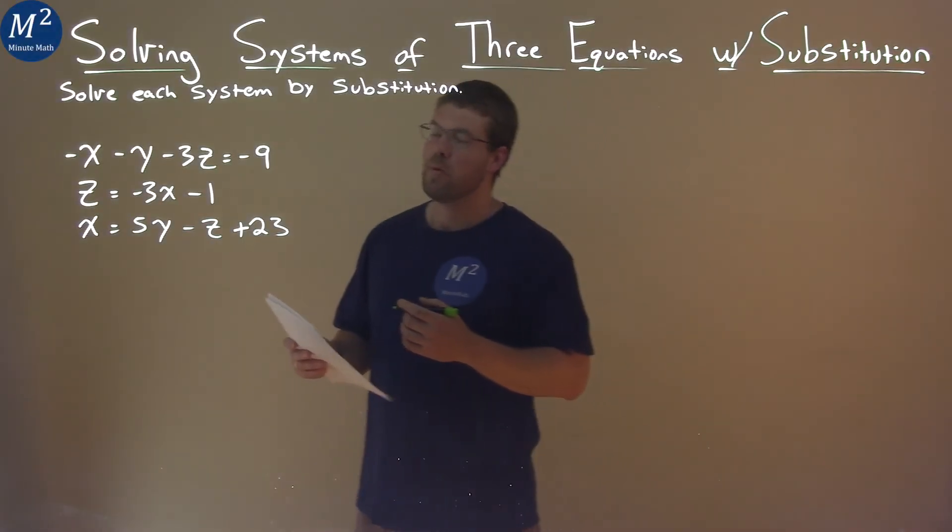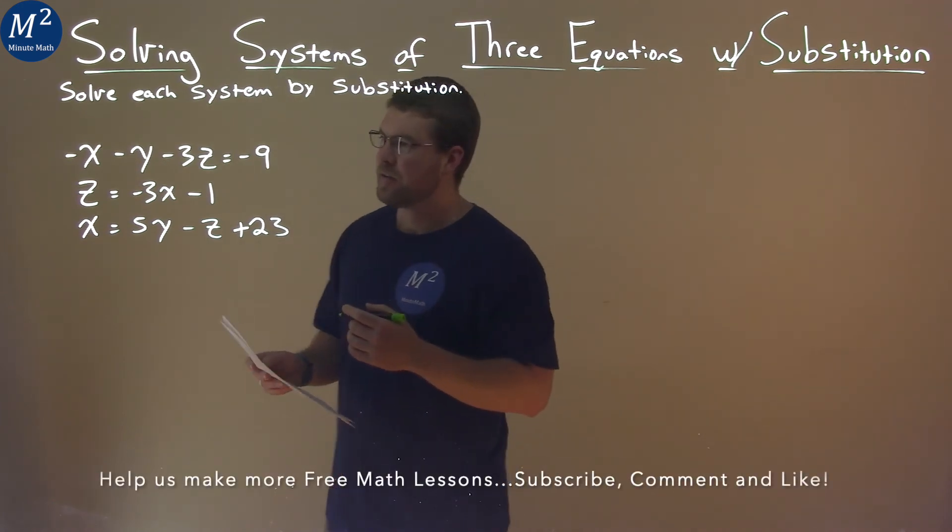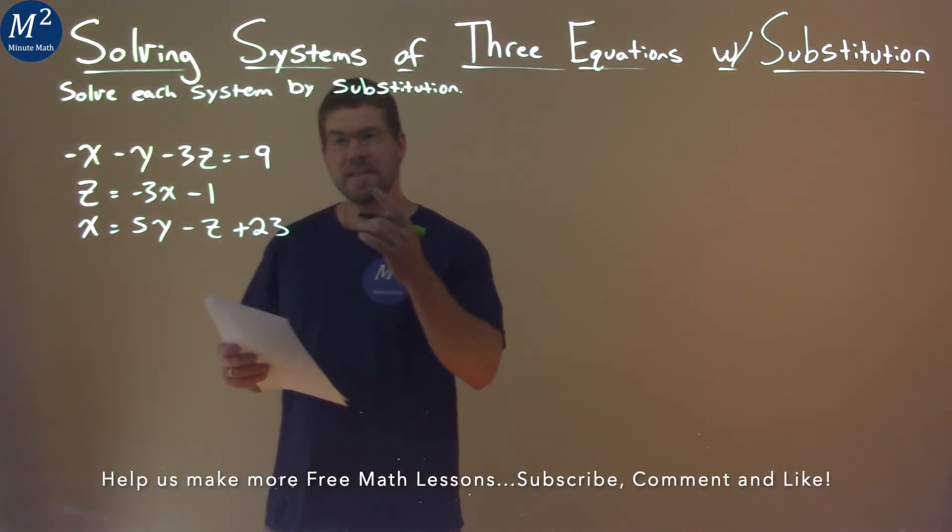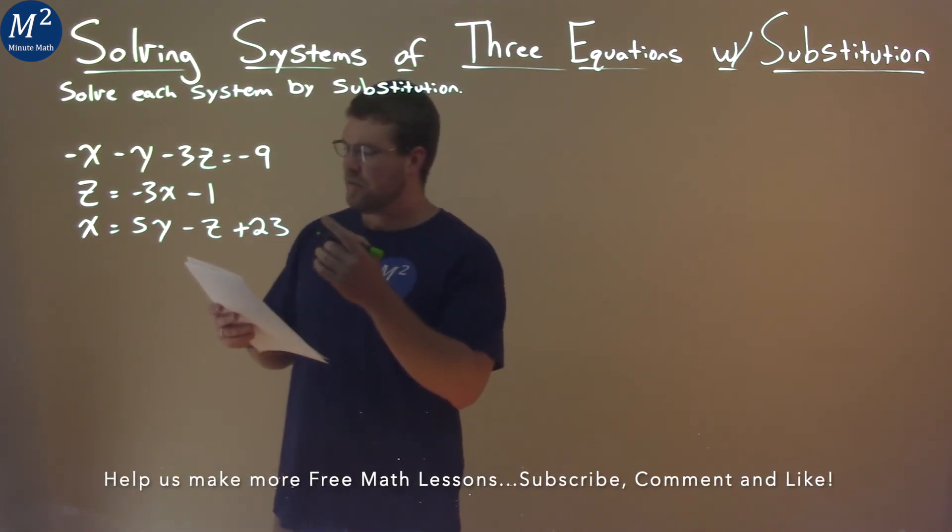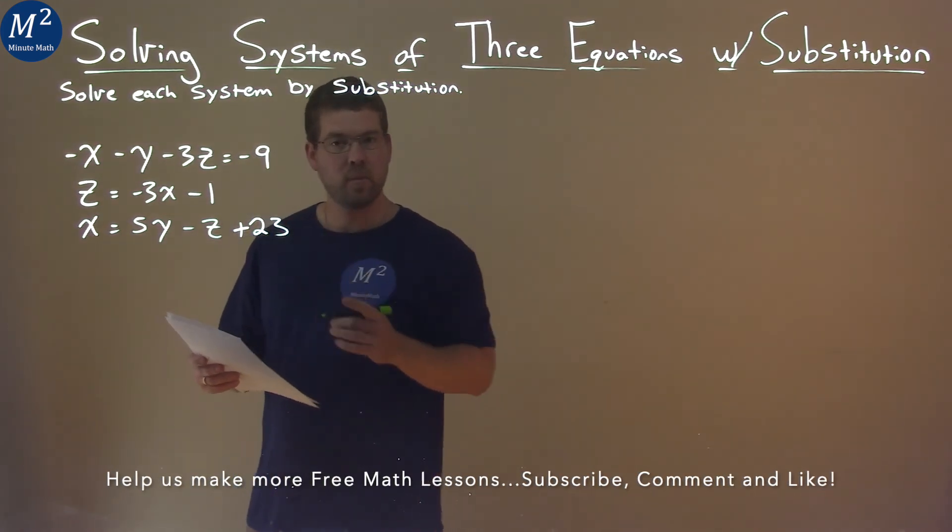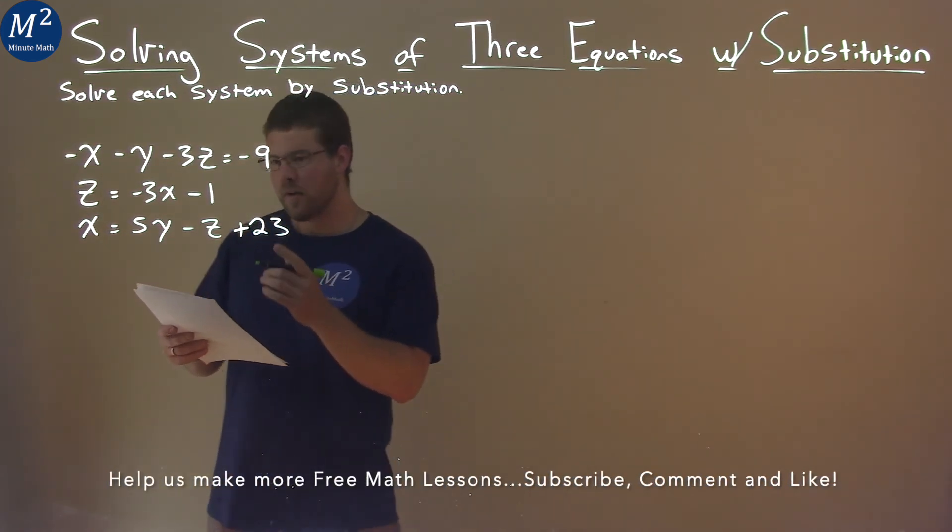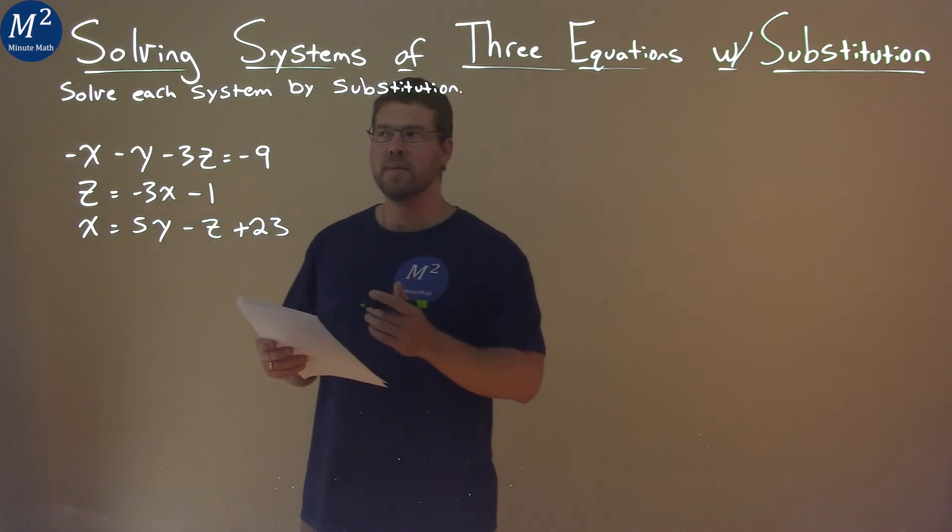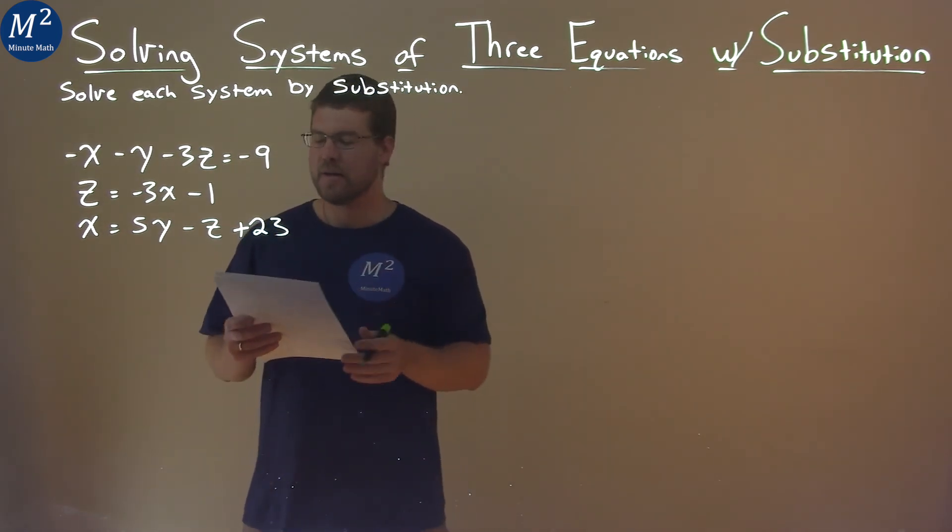We're given this problem right here: negative x minus y minus 3z equals negative 9, z equals negative 3x minus 1, and x equals 5y minus z plus 23. We want to solve this system by substitution.